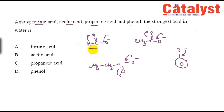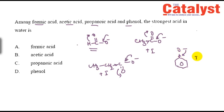The +I (inductive) effect is minimum in formic acid compared to acetic and propanoic acids. Therefore, the formate ion is the most stable conjugate base, making formic acid the most acidic among these acids when dissolved in water.